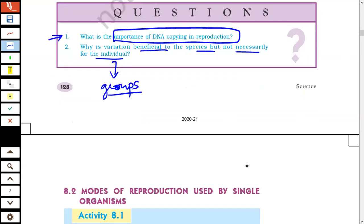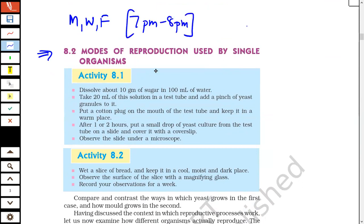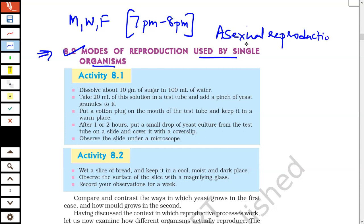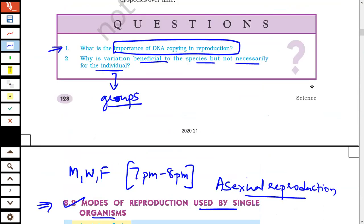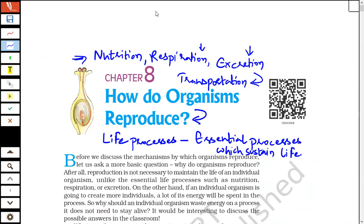So I hope this is clear to everybody. We'll be winding up the session here. Next class from Monday — we'll have our class on Monday, Wednesday, and Friday from 7 p.m. to 8 p.m. We'll be beginning up with modes of reproduction used by single organisms — that is, asexual reproduction — different modes including binary fission in amoeba, budding in yeast, budding in hydra. For those who joined late, this session is being recorded and will be put up on the YouTube channel, so you can go back and watch the video.